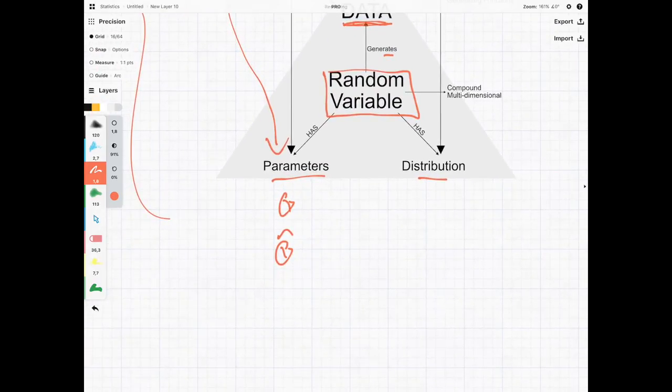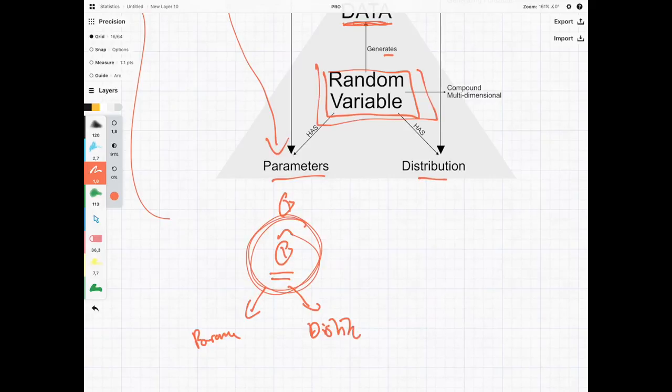However what we realized is that this estimator itself has got its own set of parameters and its own distribution and that is because this thing over here is its own random variable which means that its value is not stable.